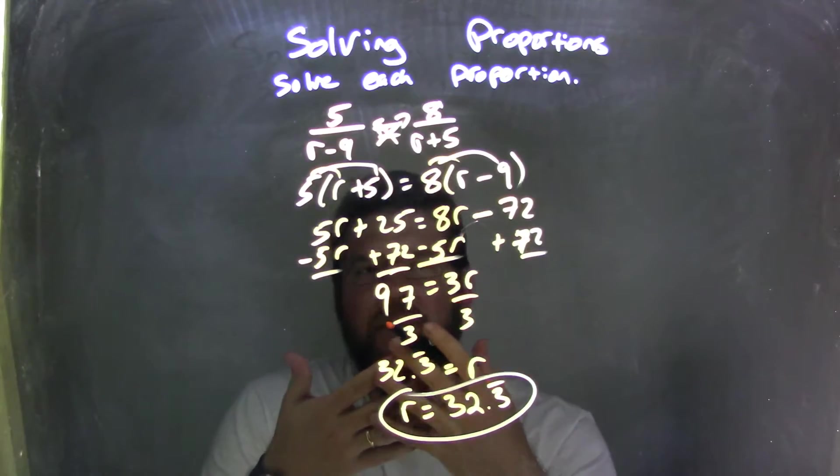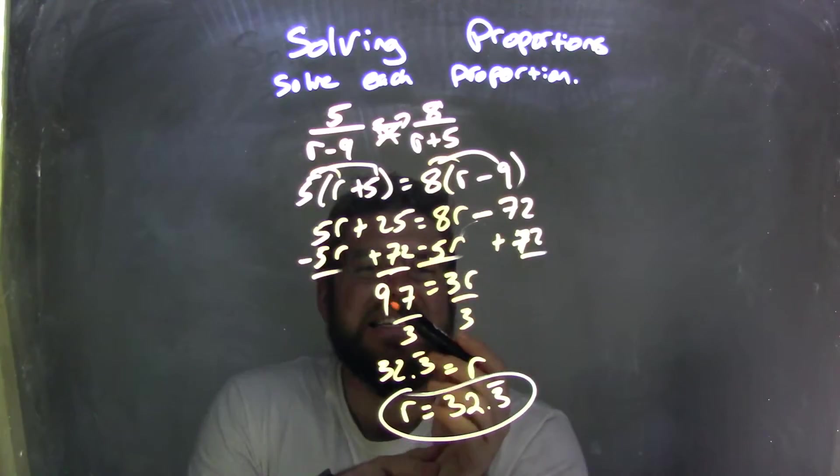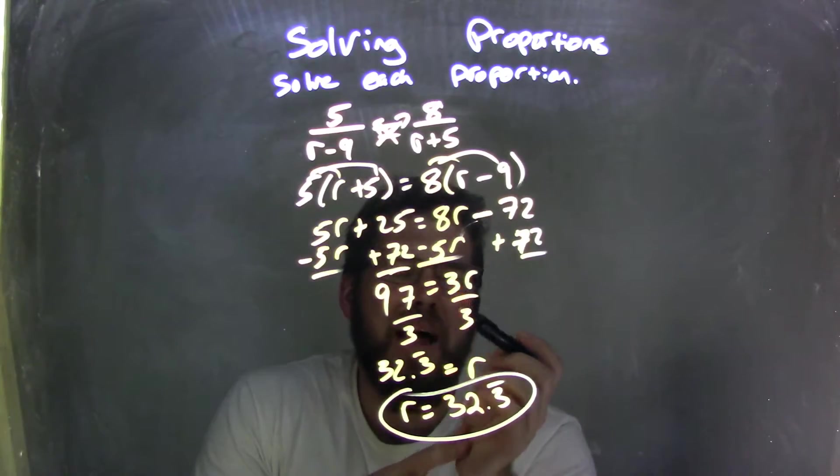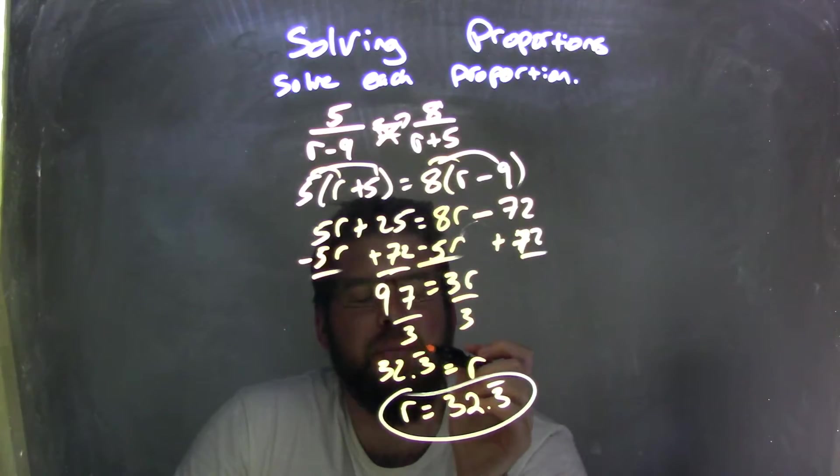Brought our like terms together. Numbers to the left, variables to the right. Giving me here 97 equals 3r. And then divided by 3 on both sides, used my calculator, got 32.3 repeating equals r.